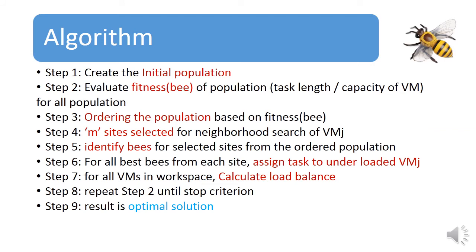In the algorithm, step one is to create the initial population of bees. Step two is to evaluate the fitness of all bees based on the task length and capacity of the virtual machine. Step three is ordering the population based on the fitness of bees. Then M sites should be selected for neighborhood search for selecting the best virtual machine, i.e. the Jth virtual machine. Then identify the scout bees for selected sites from the ordered population. For all the best bees from each site, assign the task to the underloaded virtual machine, i.e. the best virtual machine. After assigning the task, calculate the workload of all workspaces. Repeat step two until the stop criterion. The result is the optimal solution.